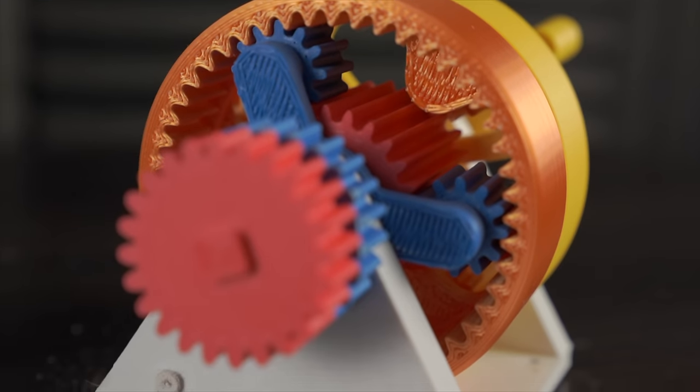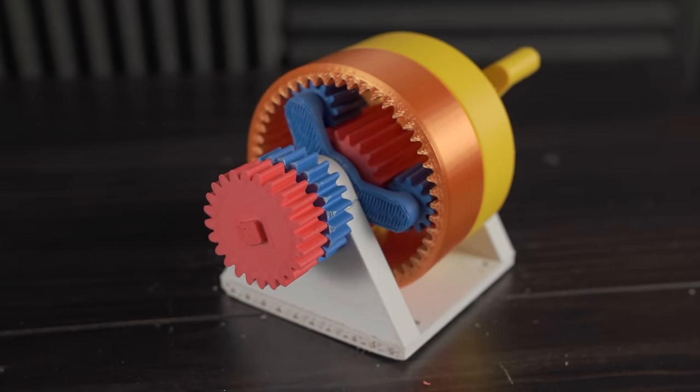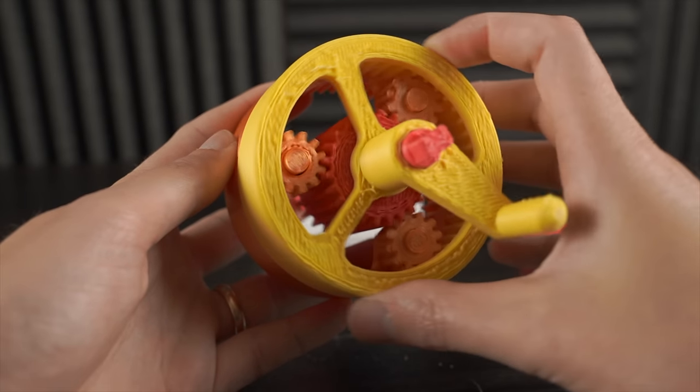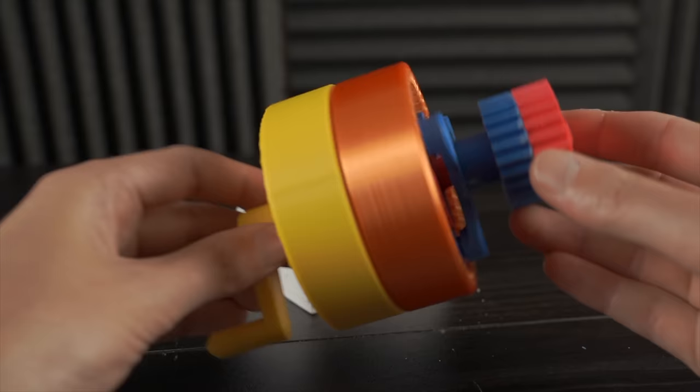This is a model of an automatic transmission. Automatic transmissions are one of the least understood mechanisms. Almost all cars on the road are automatic. So how do they work?